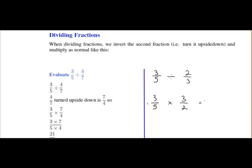When we multiply, we multiply numerator by numerator, so that's 3 by 3, which is 9, and multiply denominator by denominator, 5 by 2 is equal to 10. So we get a final answer of 9 over 10.